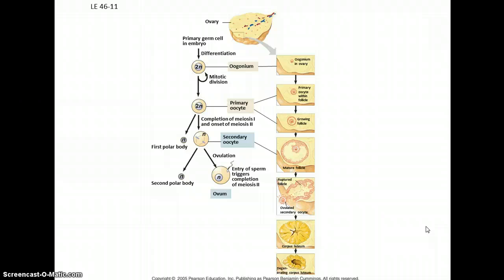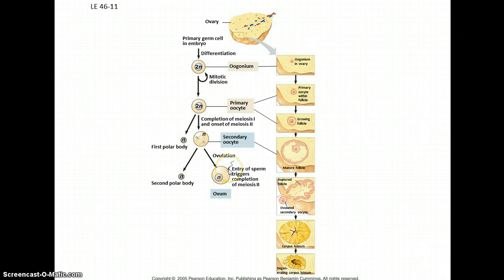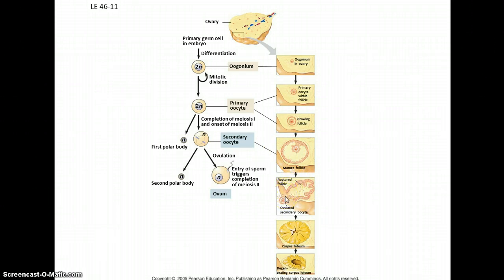Gametogenesis is the formation of gametes. In females — oogenesis — we start with diploid stem cells called oogonia that can reproduce themselves, but they can also begin meiosis. They're first known as a primary oocyte, which goes through meiosis one to become the secondary oocyte. They generally get stuck at that stage, and only after ovulation and fertilization do they complete meiosis two and become an ovum or fertilized egg. In the ovary, the follicle contains this secondary oocyte, and ovulation is when the secondary oocyte is released. The ruptured follicle becomes the corpus luteum, which plays a role in regulating the female cycle.